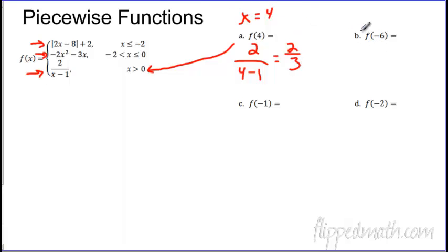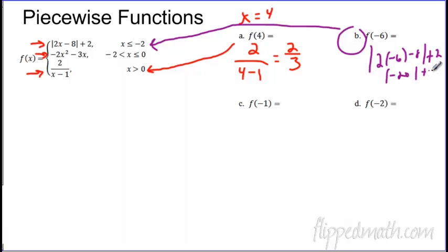Where does negative 6 go? Negative 6 is what? Less than negative 2. So if x is that, you plug it in the top one. So you just plug and chug. Replace x with negative 6. And then that's minus 8 plus 2. And then it's a matter of simplifying. You get negative 12. You get the absolute value of negative 20, which the absolute value is positive, so it's 22. Excellent.